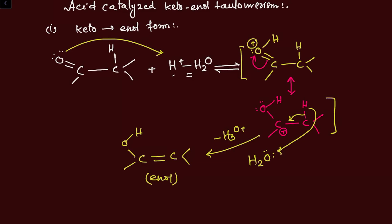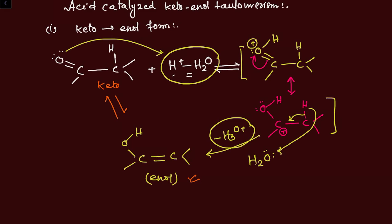When you observe this mechanism, you find that the number of moles of H3O+ consumed in this reaction equals the amount of H3O+ regenerated. We know that a catalyst never participates in a chemical reaction — it only activates it. That is why acid catalyzes this conversion. We know that one equilibrium exists between keto and enol tautomerism, meaning that if keto converts into enol form, then enol can also convert back into keto form in either acidic or basic medium.